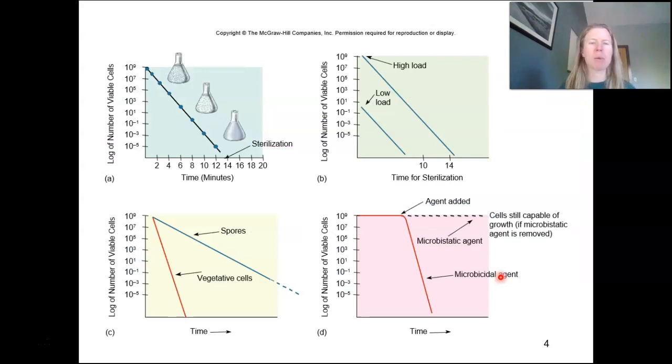And again, just a reminder. This is pointing out the difference between endospores and how hardy they are compared to the vegetative form. Notice, endospores, 1.5 times more resistant to moist heat. That's like steam in an autoclave.